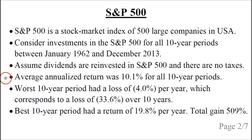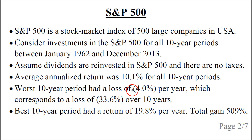The average annualized return was 10.1% for all 10-year periods. The worst 10-year period had a loss of 4% per year, which corresponds to a loss of a third over 10 years. The best 10-year period had a return of 19.8% per year, and the total gain over 10 years was 509%. You should keep the average return in mind, as well as the worst loss and the best gain per year.